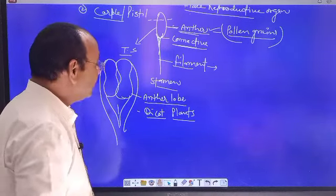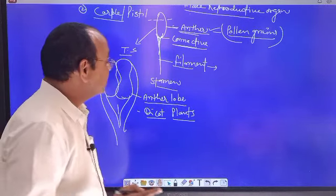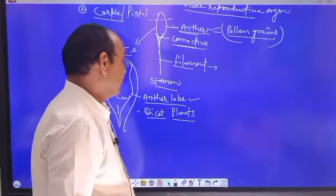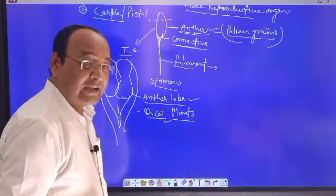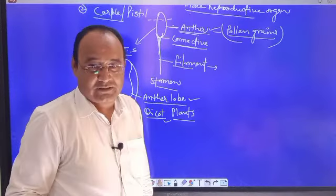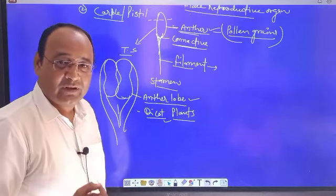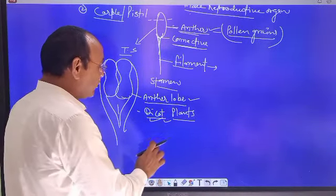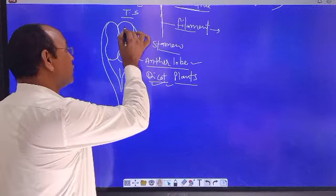Give the example of a dithecous anther. Dithecous means the presence of two anther lobes. The example is dicot plants. Plants included in dicot are total pulses and grains. In a single anther lobe, two special structures are present which are known as microsporangia.